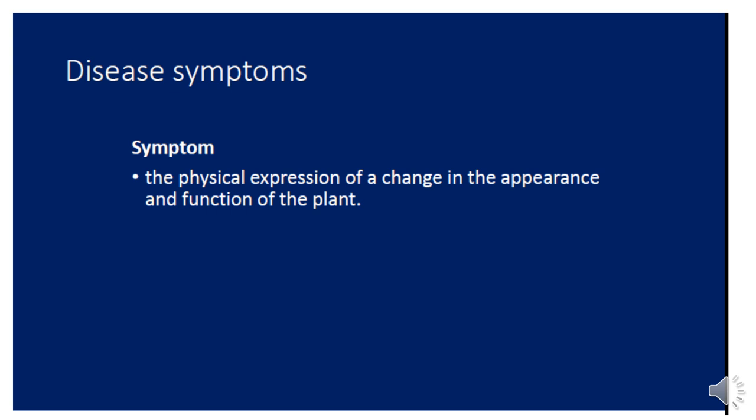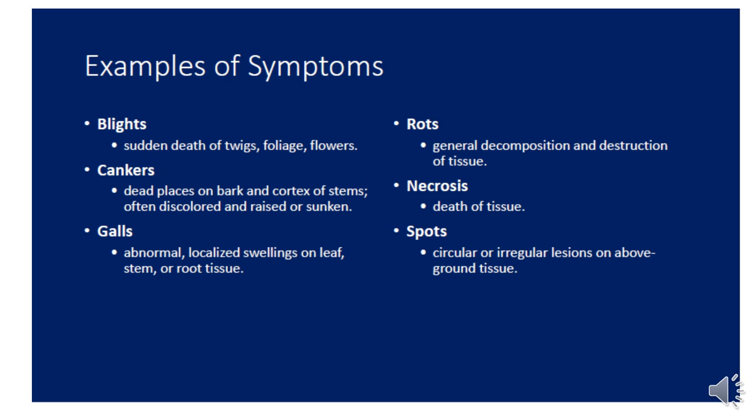So what is the meaning of symptoms? Symptoms are any physical expression of a change in the appearance or function of the plant — any abnormal changes that differ from the normal appearance of the plant. Examples of symptoms include: blight — a sudden death of the foliar parts such as twigs, foliage, or flowers; cankers — dead areas on the bark or stem; galls — abnormal growth of the root system or stem; rots — general decomposition of tissue or fruit; necrosis — general death of tissue on a limited area; and leaf spots — circular or irregular regions on above-ground tissue.